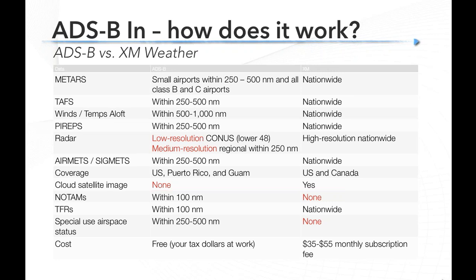How about ADS-B versus XM? They're very similar in terms of the key things you're looking for: radar, METARs, TAFs, PIREPs, TFRs. But there are some differences. There is no satellite imagery on ADS-B, while XM has it. The radar is a little lower resolution on ADS-B. But probably the biggest piece for many people is that ADS-B is free — subscription free, your tax dollars paid for it — while an XM subscription runs about $35 to $55 a month.